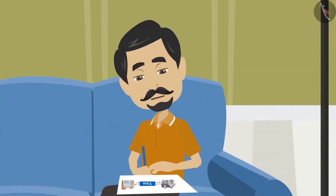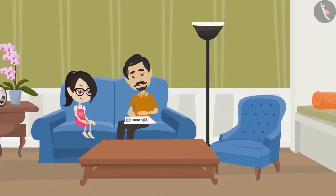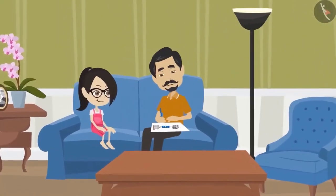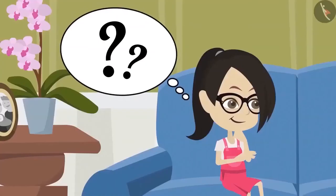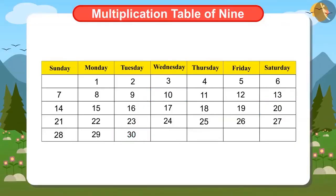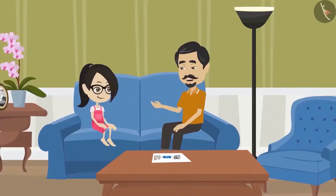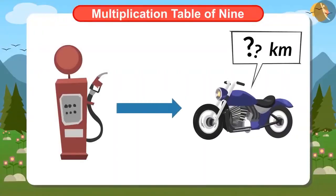Vandana's father drives his motorbike for 9 kilometers to go to his office and come back. Today they are calculating how many kilometers Papa rides the motorcycle in 10 days. But why are they doing this? Papa, why do you want to know this? Because I have to fill the petrol in the motorcycle every 10th day. I want to find out how many kilometers I ride the motorcycle after filling the petrol.